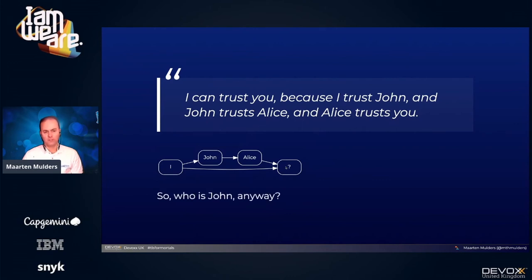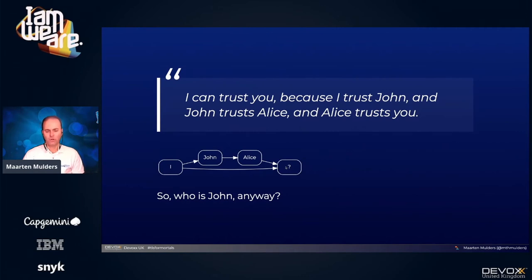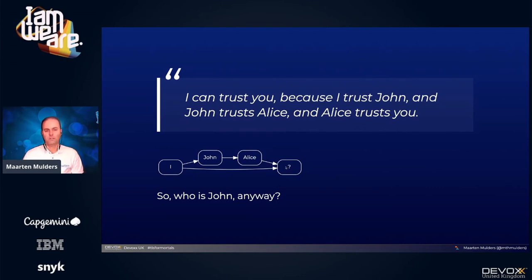But who is John? In reality, there are roughly 160 'Johns' in any modern computer. If you open up the keychain of macOS, or look into the cacerts file of any modern Java distribution, or look at the Windows Trust Store, you'll find roughly 160 commercial companies that issue digital certificates. I haven't checked all of them. What actually happens is I'm putting my trust into Apple for carefully selecting them, or into Oracle for shipping a decent cacerts file. It's up to you to decide if that's a wise decision.